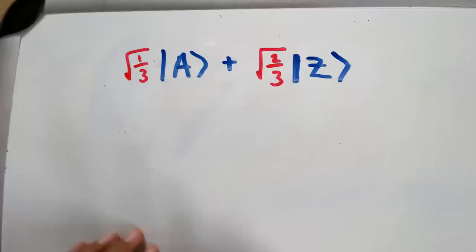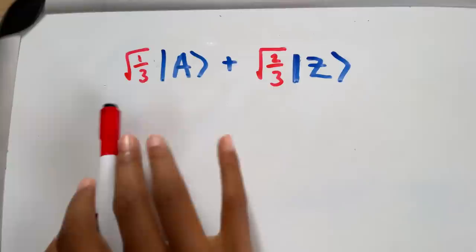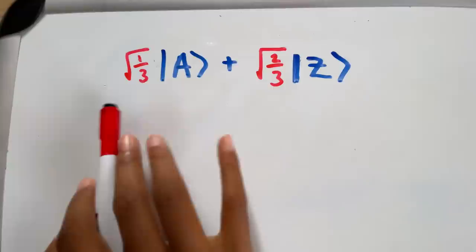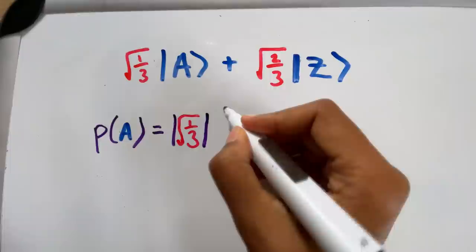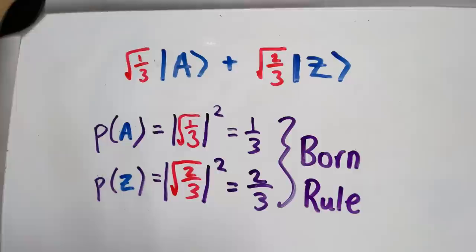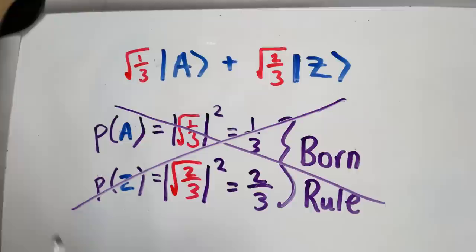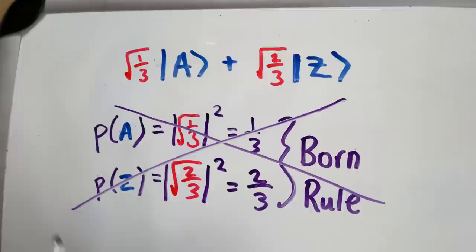So here's a more complicated state. You have something that's a superposition of A and Z, and you can see that it's more of Z than A, because this number in front of A is smaller than the number in front of Z. In fact, according to the Born rule, you would say that the probability of A is equal to taking that coefficient and squaring it, which is equal to a third. And the probability of Z is equal to two thirds.